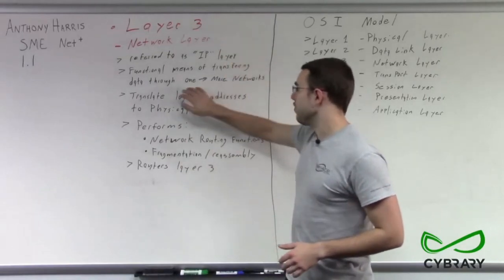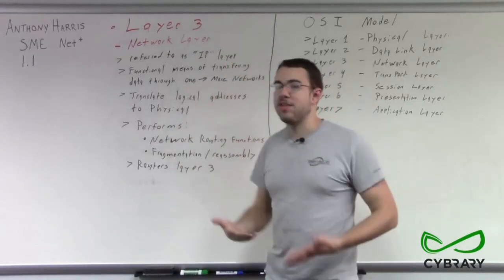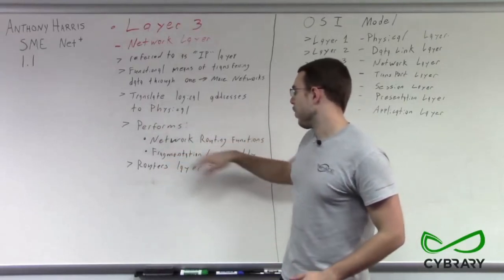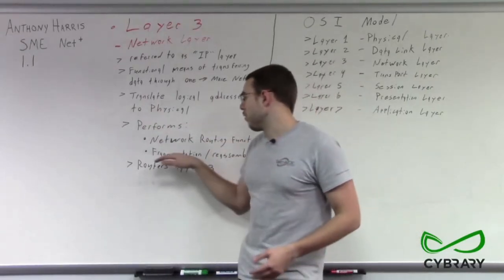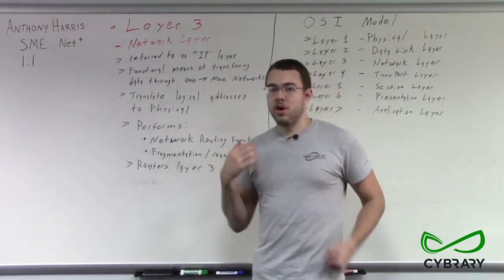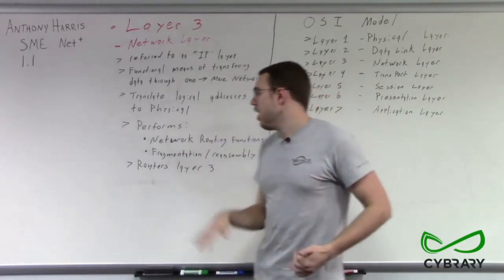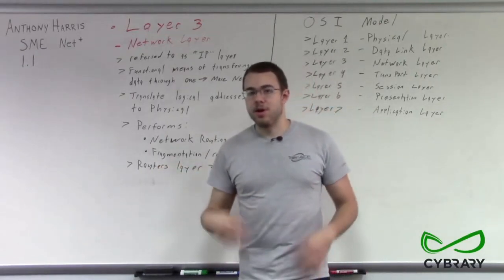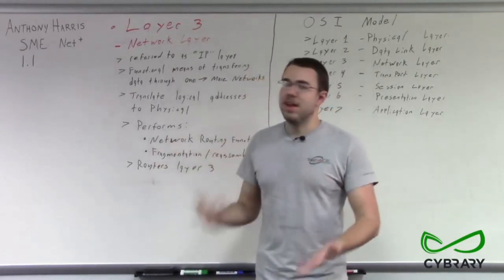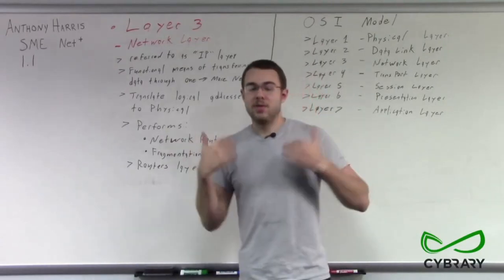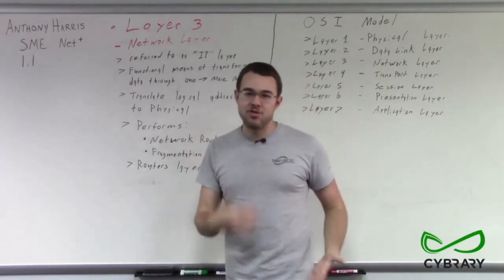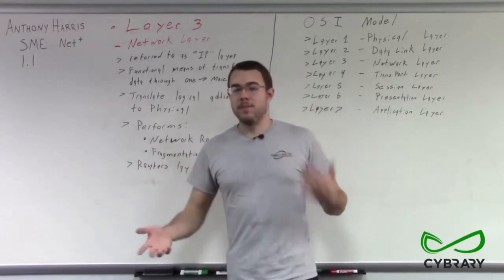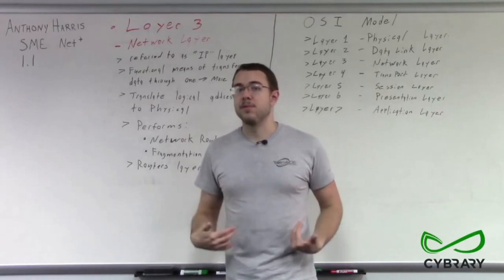Layer 3 is where we're transmitting our data across different networks — we are performing network routing functions. Layer 3 is also where we encounter fragmentation and reassembly of our different packets. Our routers operate at layer 3; they take packets, look at the IP addresses, and send them to their particular destinations.